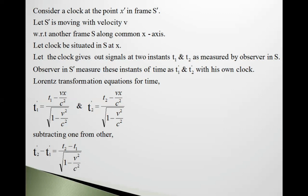Lorentz transformation equations for time are T1' equals T1 minus Vx upon c² divided by square root 1 minus V² upon c², and T2' equals T2 minus Vx upon c² divided by square root 1 minus V² upon c².